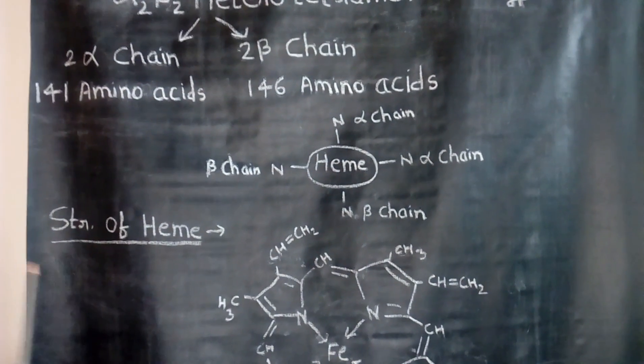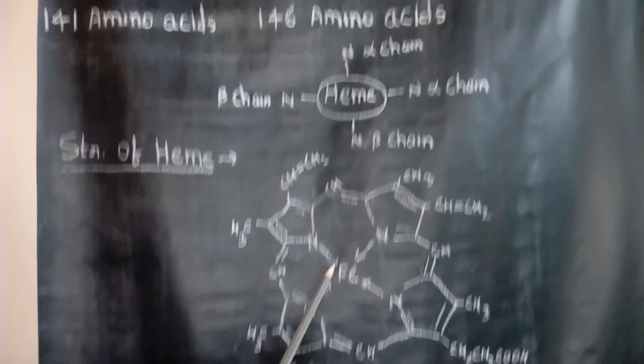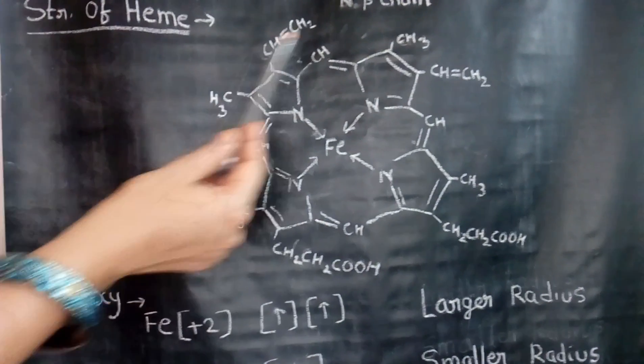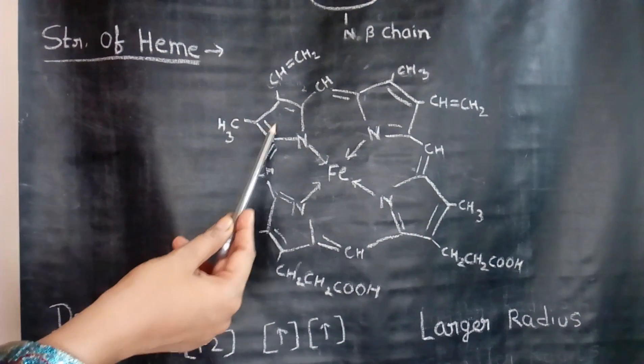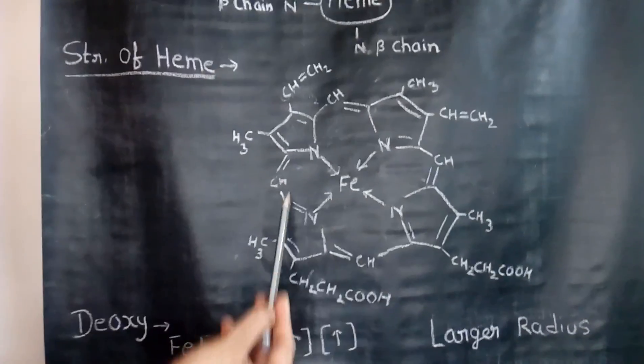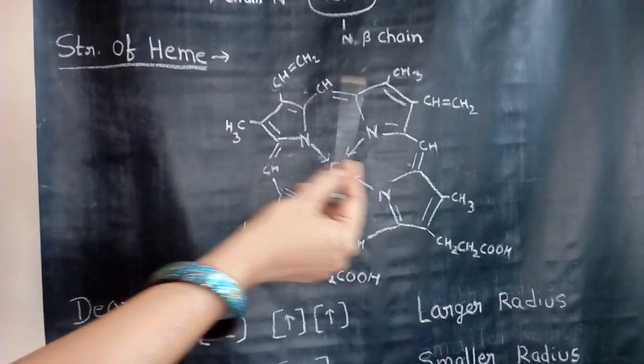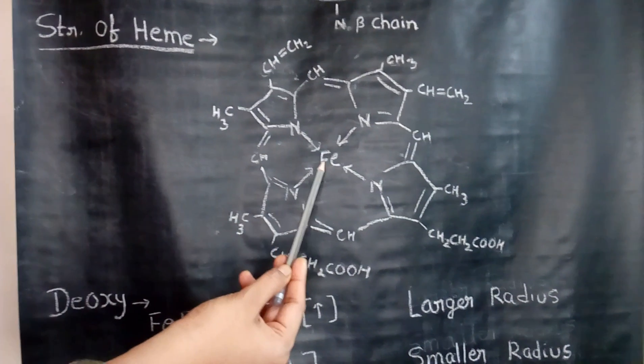Let me consider the structure of heme. In the structure of heme, there is an iron atom at the center attached to the porphyrin ring. What is porphyrin ring? Actually it is 4 pyrrole rings, 4 pyrrole groups attached to each other by CH groups. They form a complete network and the iron is present in the center of it.